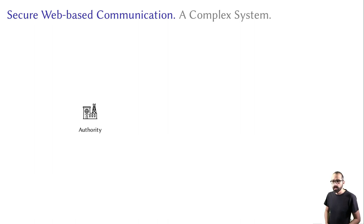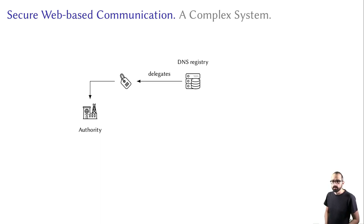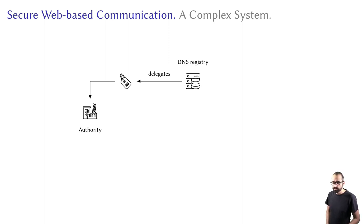Let's say that you're an authority and you want to go online. The first step is to have a domain name delegated to you. This can be under an open namespace such as .com, .org, or .net, where anyone can register a name, or it can be under a restricted top-level domain with restrictive eligibility requirements such as .gov, which is reserved for governmental organizations in the US.